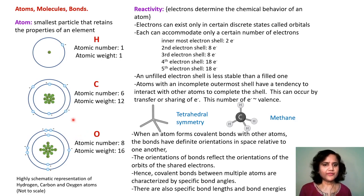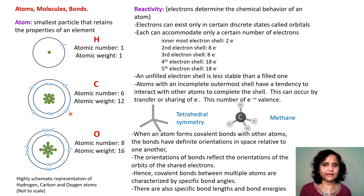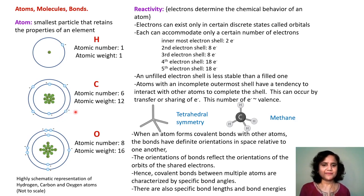An unfilled electron shell is less stable than a filled one, and hence when there is an incomplete shell, the atom tries to complete this shell by taking up or sharing electrons. This number of electrons is termed the valence.